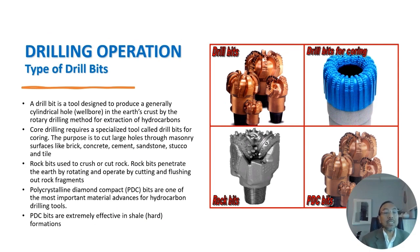A drill bit is a tool designed to produce a generally cylindrical hole in the earth using the rotary drilling method for extraction of hydrocarbons. Core drilling requires specialized drill bits for coring, used to cut large holes through masonry surfaces like brick, concrete, cement, sandstone, stucco and tar.